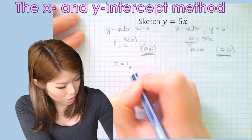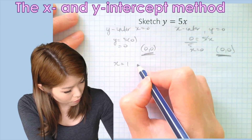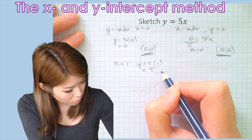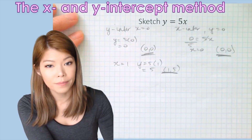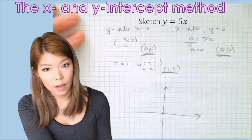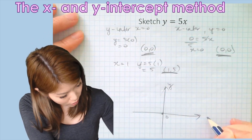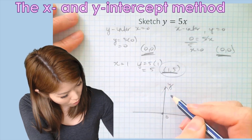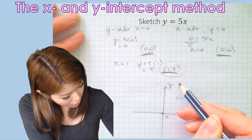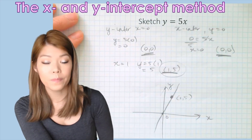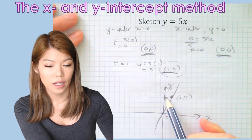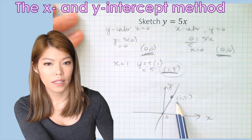The easiest value is x equals 1: y equals 5 times 1, so y equals 5. Our second point is (1, 5). In this scenario the x and y-intercepts are the same at the origin (0, 0), so we need a second point, which is (1, 5). Draw the line first, then put the dot after. Whenever you see that type of equation with no constant c, we know we need to find a second point.